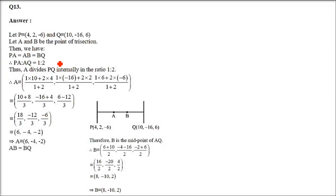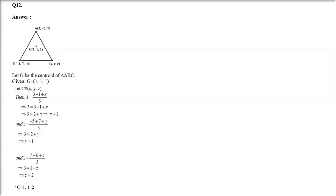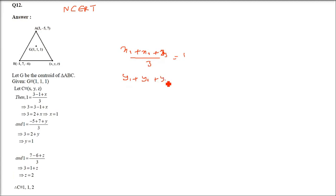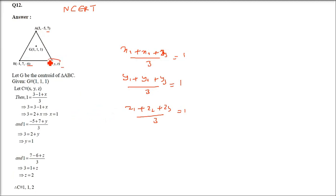Question number 13. This is also a NCERT question. x1 + x2 + x3 / 3 = 1 — x1, x2 are known, x3 is assumed to be x. Similarly y1 + y2 + y3 / 3 = 1, and z1 + z2 + z3 / 3 = 1, where z3 is assumed to be z. Since two coordinates and the centroid (1,1,1) are given, we can find the third vertex x, y, z.